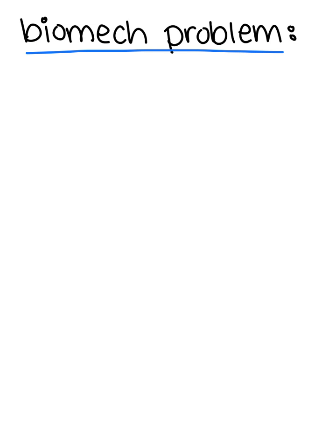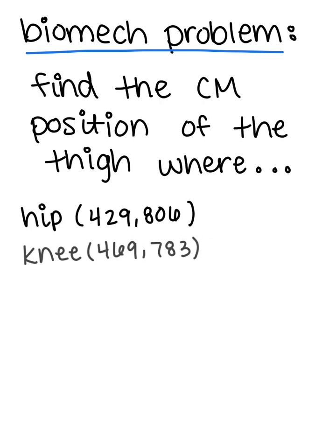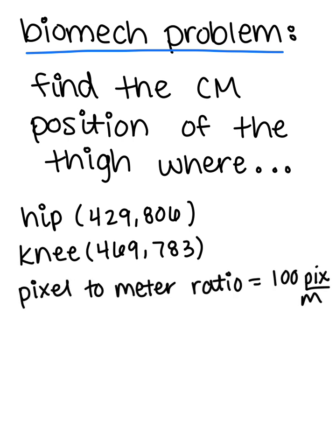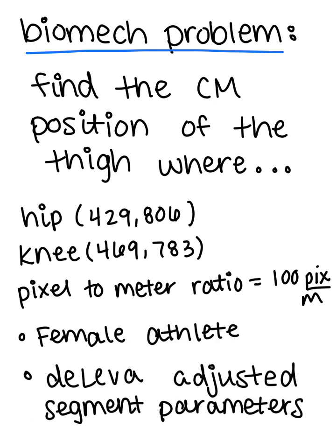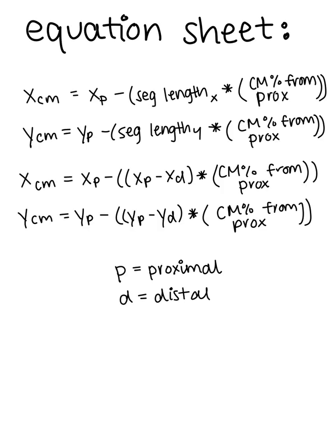So for this biomech problem, we're going to find the center of mass position of the thigh with these hip and knee coordinates specified here, a pixel to meter ratio of 100 pixels per meter, a female athlete, and using the de Leva adjustment segment parameters. We're going to use equations that help us find the center of mass in the x and y directions by relating the proximal and distal ends of the segment.